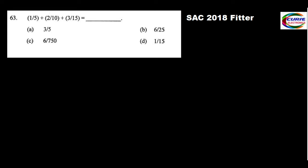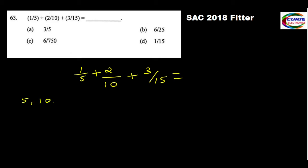Let's go to the next question. This question is much more simple: 1/5 plus 2/10 plus 3/15. We have to find the answer. First, what we do — we have to find the LCM. So we have 5, 10, 15.